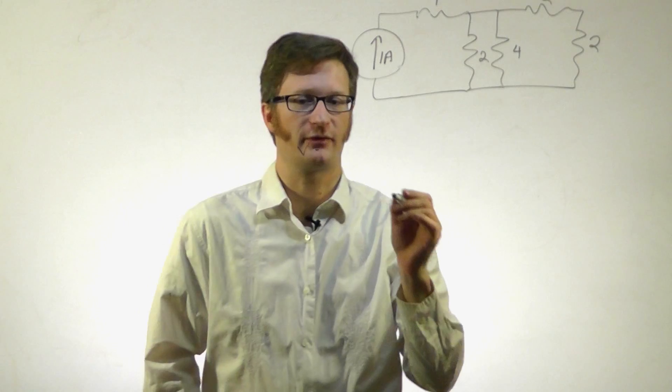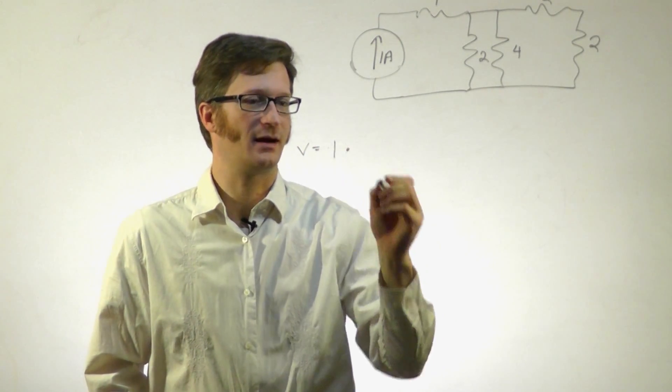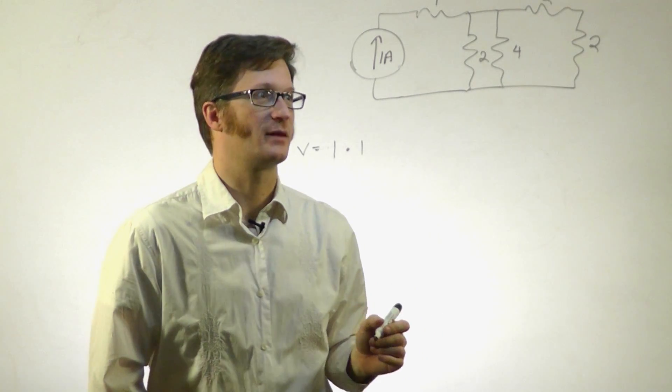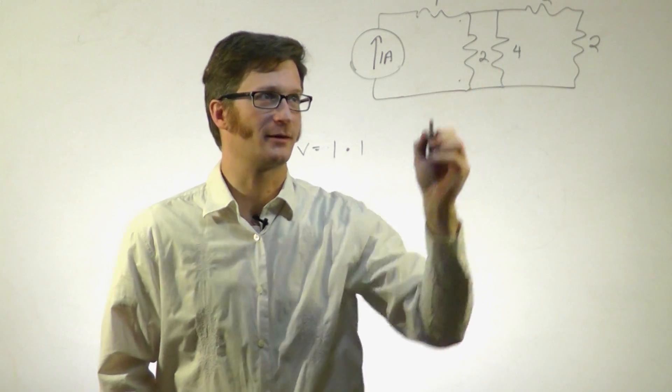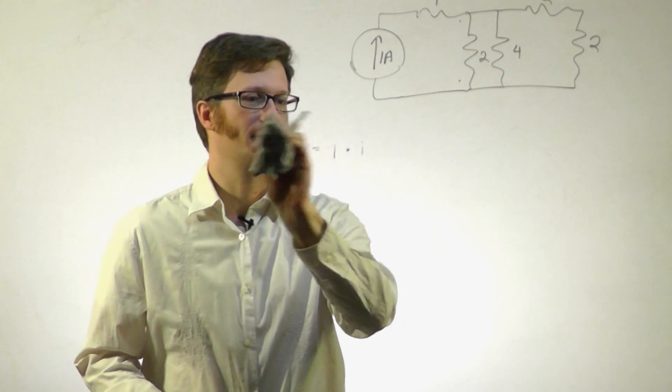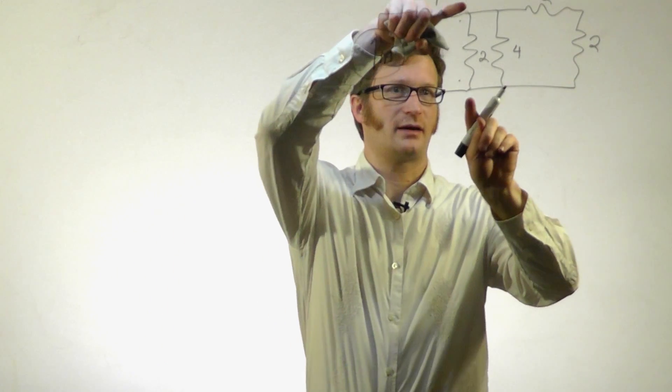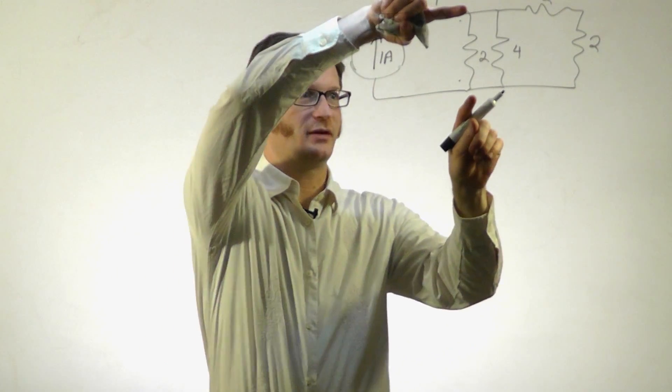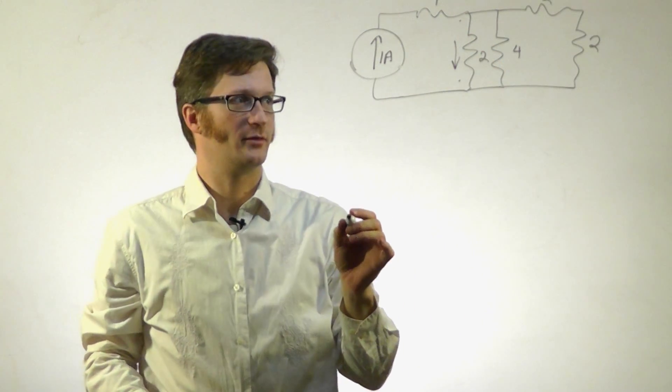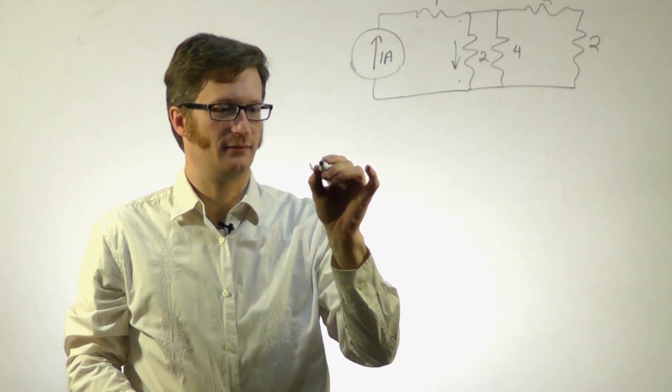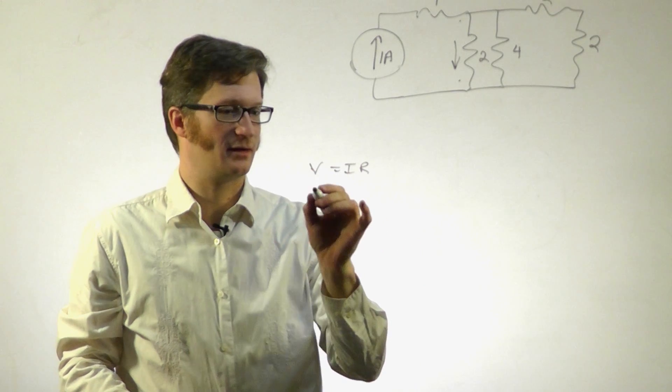1 amp times my resistor, which is 1, means I have 1 volt between here and here. I can figure out my current from here because I know there's 1 volt right there. My current down this way will be V equals IR. I know my voltage - that's 1 volt.